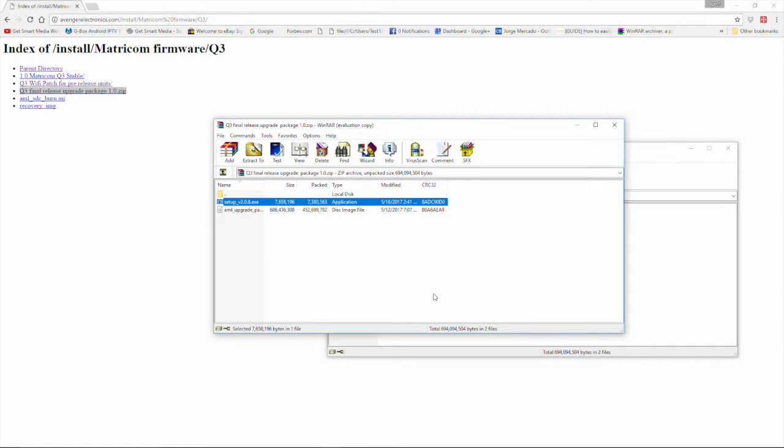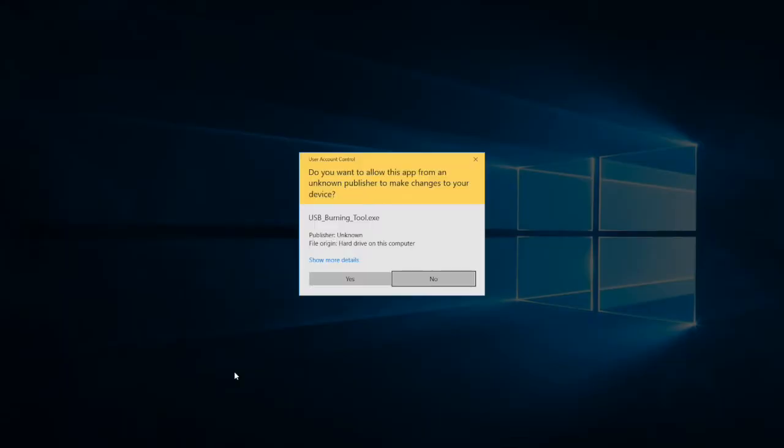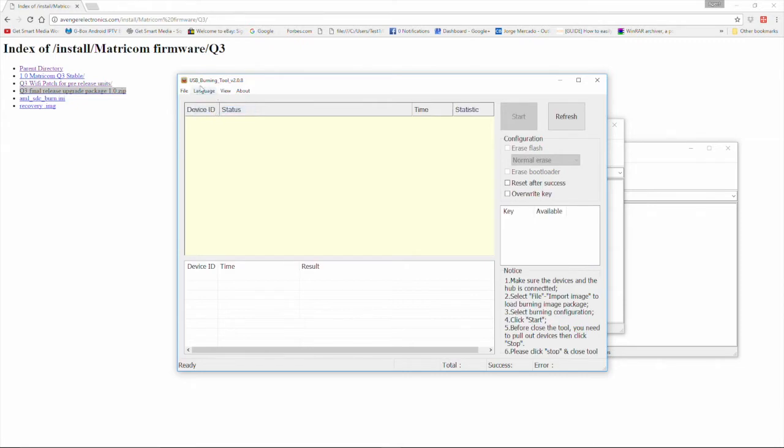Now that the USB burning tool has been installed on the computer, let's go ahead and open it up. Every time you launch the tool you should get this pop-up that asks do you want to allow this app from unknown publishers to make changes to your device. We're going to say yes. So here is our USB burning tool. Now this thing's in Chinese. However, if we click up here to this second group of characters, you see that we have the option for English. So we have the USB burning tool open and the next step will be to load the image so that we can go ahead and flash our unit.